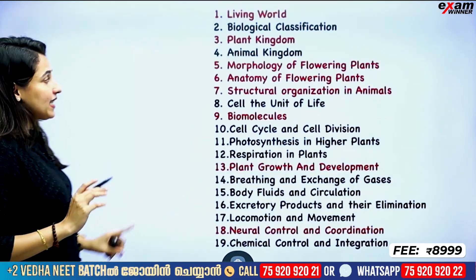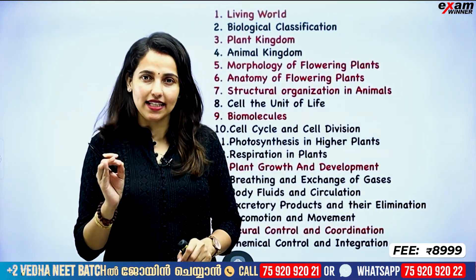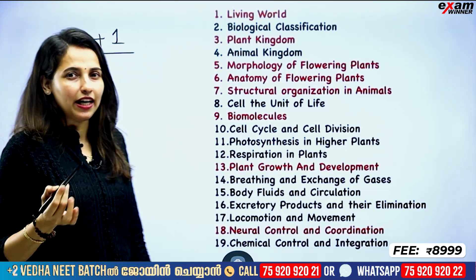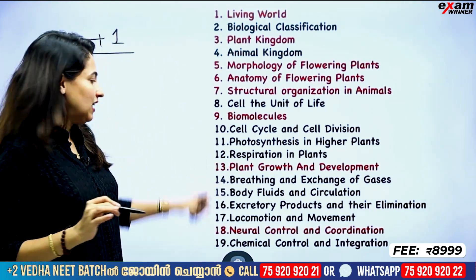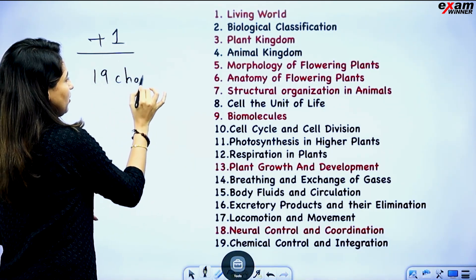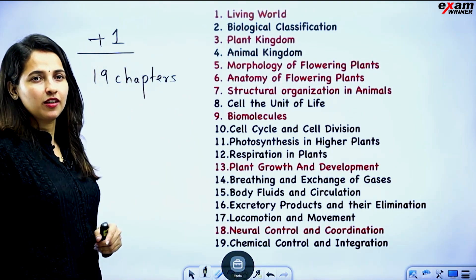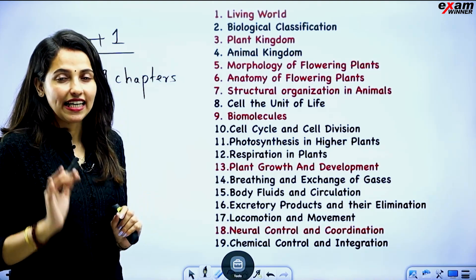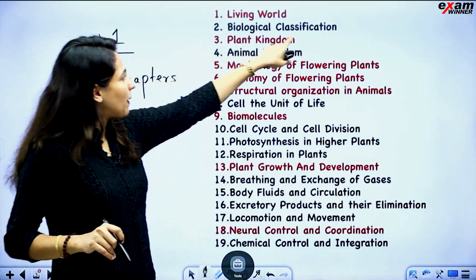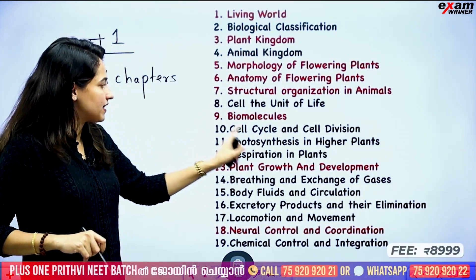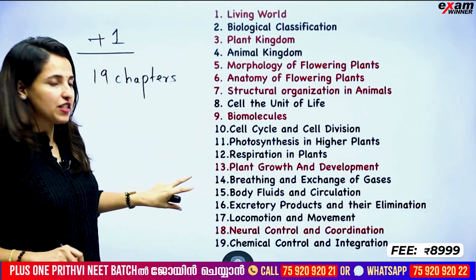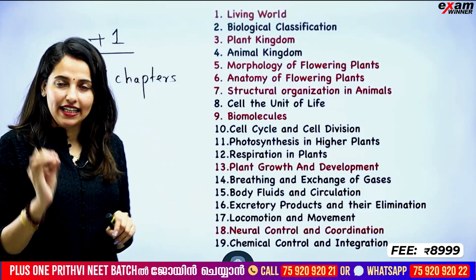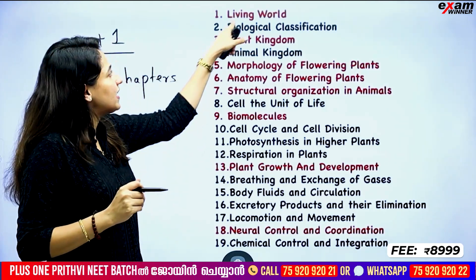First, we are going to look at which chapters are in Plus 1 and Plus 2. If you are in the Plus 1 textbook, we have 22 chapters, but if you delete 3 chapters, now you have to do 11 chapters. In those 11 chapters, you have to mark the chapters in red color — there are no chapters with changes. In black color: biological classification, animal kingdom, cell unit, cell cycle, photosynthesis, respiration.